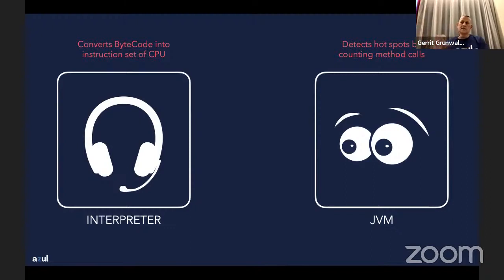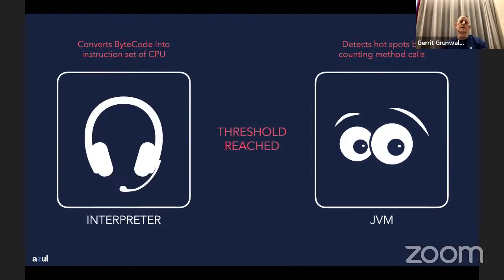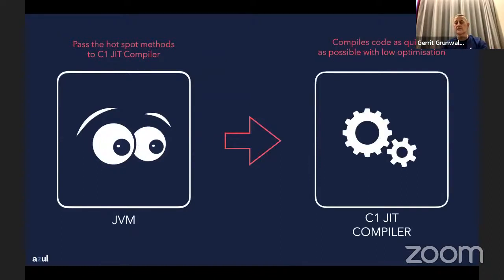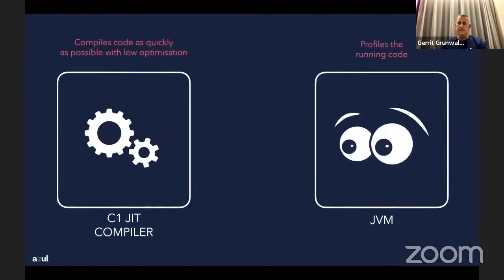The interpreter takes the bytecode and converts it into the instruction set of the current CPU and architecture. Once this is running, the JVM detects hotspots by counting method calls — that's also the reason why the HotSpot compiler has its name. Once the method call counter reaches a specific threshold, the JVM passes that hotspot method to the C1 JIT compiler. In former days this was called the client compiler; it compiles code as fast as possible with minimal optimization.